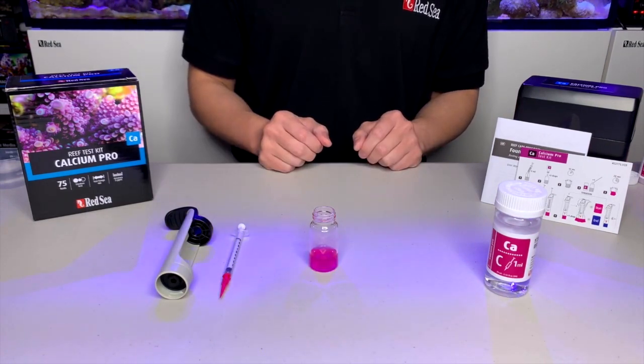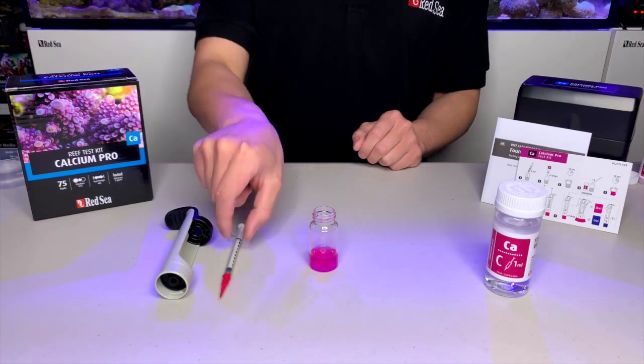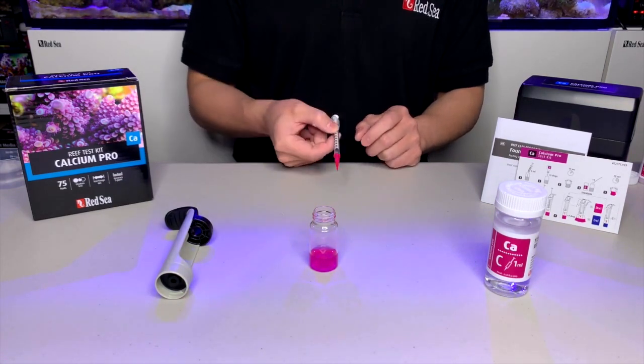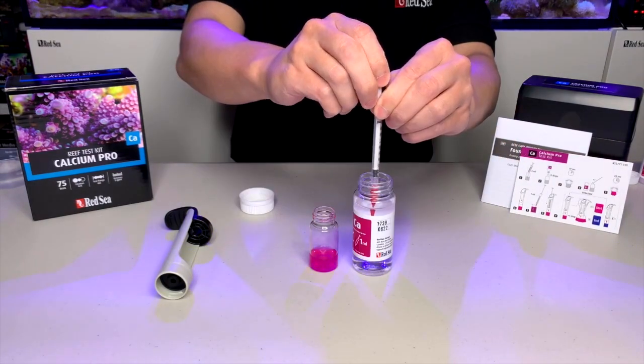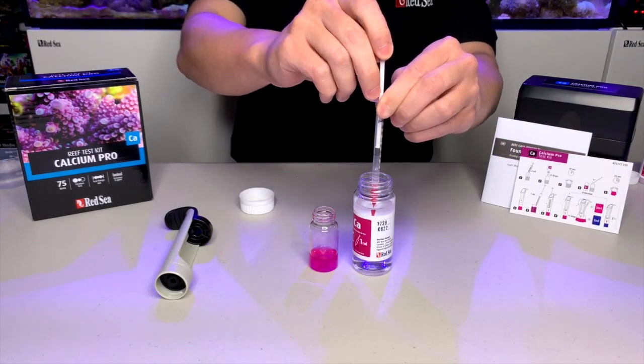We are now going to prepare the titration. Use the 1ml syringe provided to take 1ml of titrant C. Make sure the bottom of the plunger is at the 1ml mark.